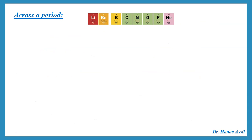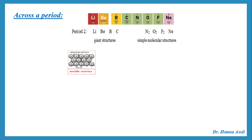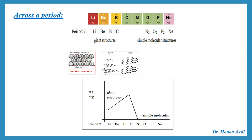Looking at a period from left to right — lithium, beryllium, boron, carbon, nitrogen, oxygen, fluorine, neon — what is happening to the melting point? Lithium, beryllium, and boron are all metallic structures with increasing numbers of delocalized electrons around the positive ions. Carbon is also a giant three-dimensional structure with many strong covalent bonds that need a lot of energy to be broken. So there is a gradual increase in melting point going from left to right, from group 1 to group 4.